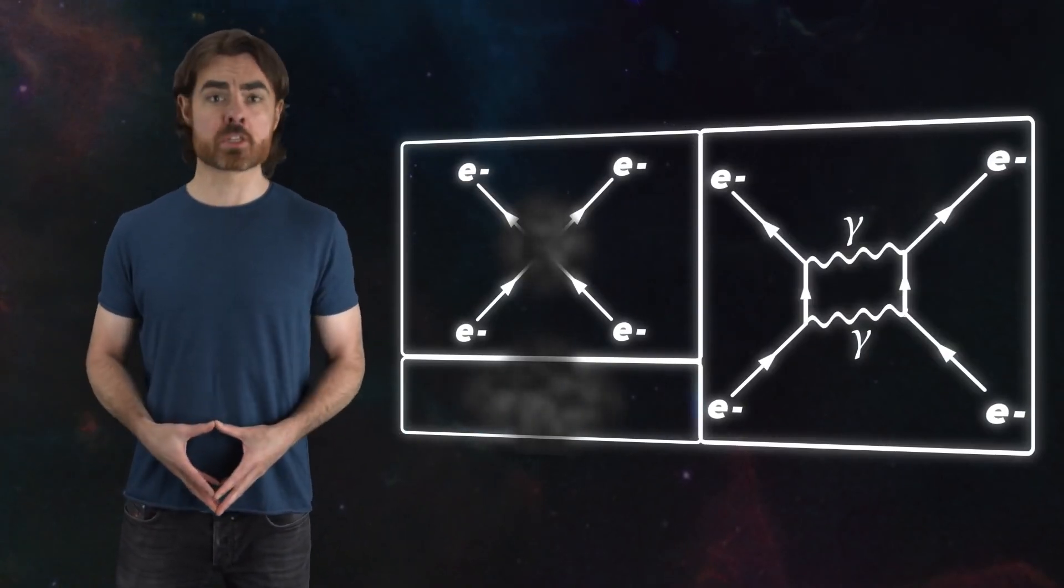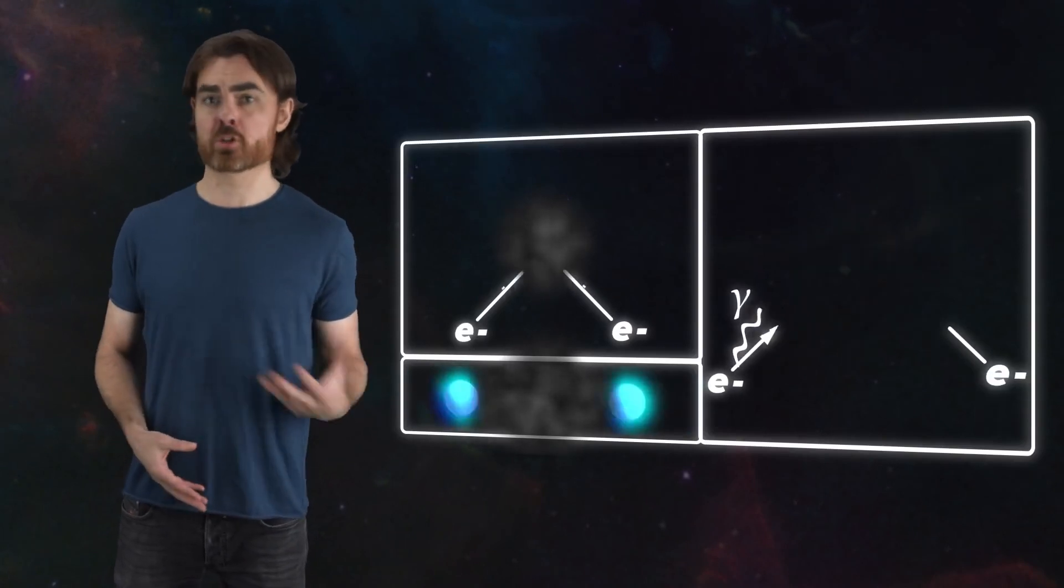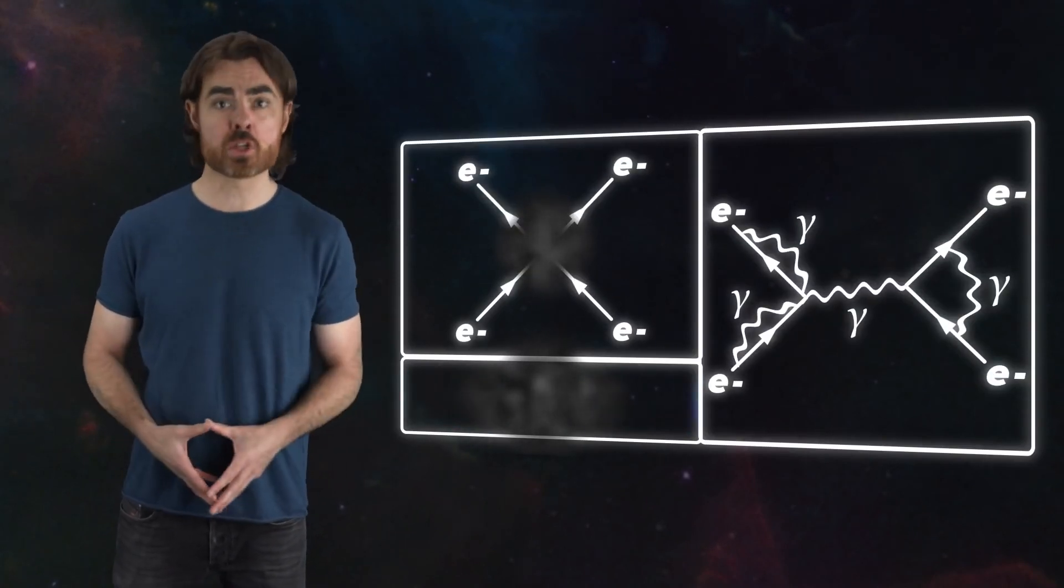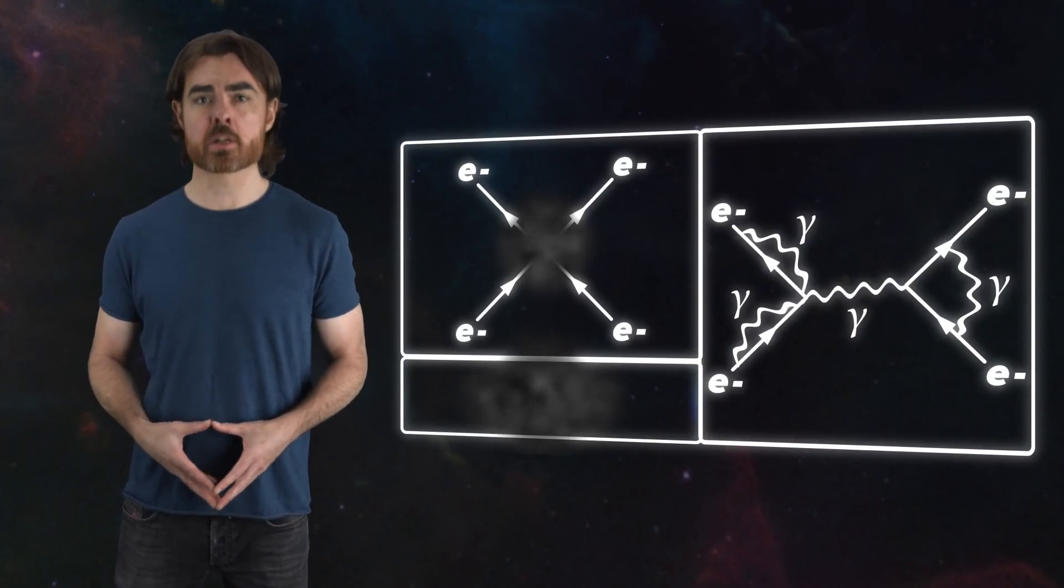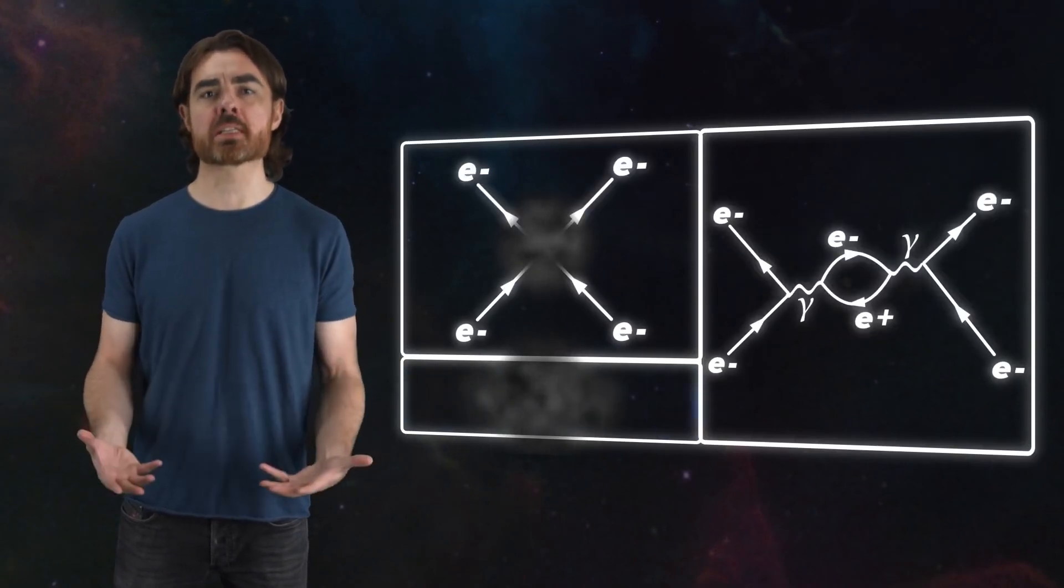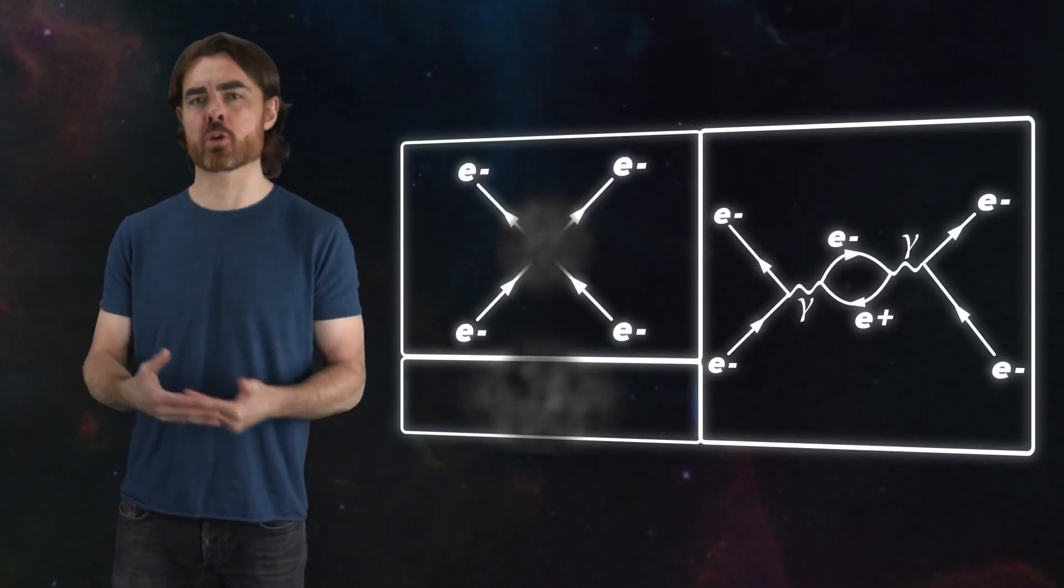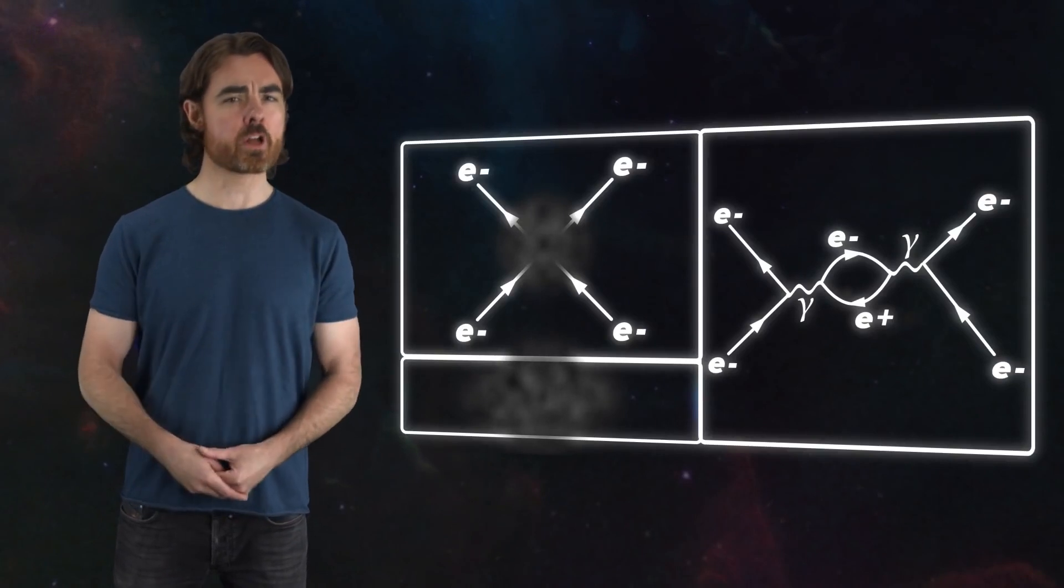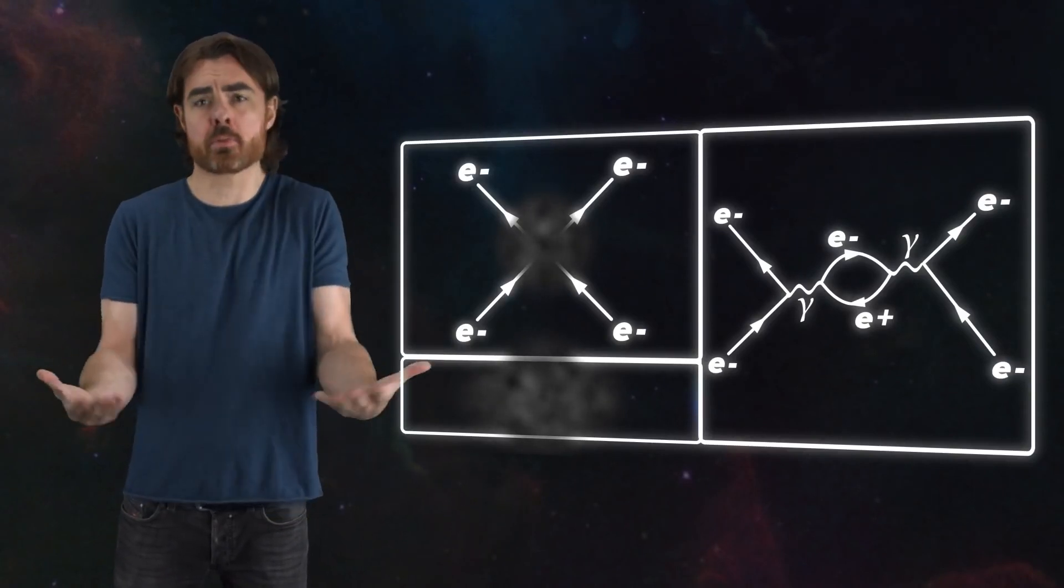But we can add as many of these vertices as we'd like, including the electrons exchanging photons with themselves at different stages in the process, or photons momentarily splitting into virtual electron-positron pairs. As long as the final result is the same, any of these are possible.